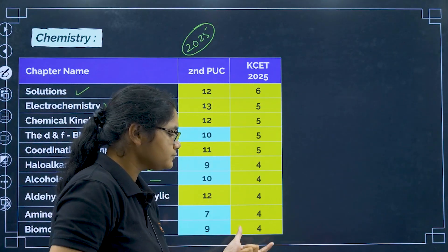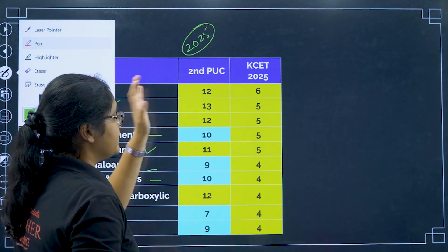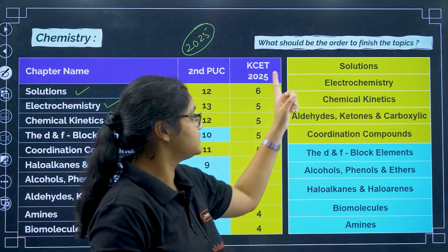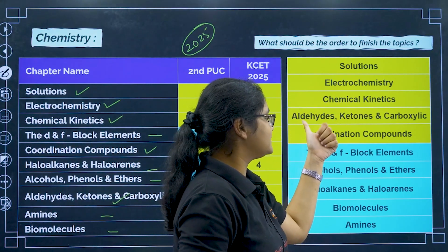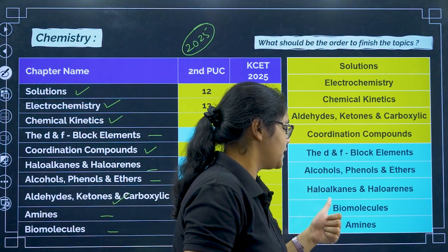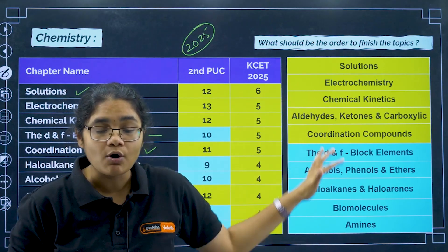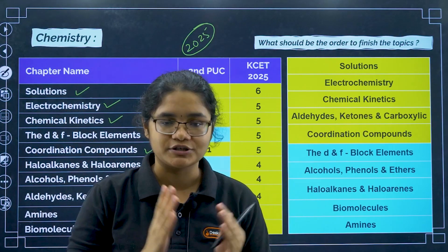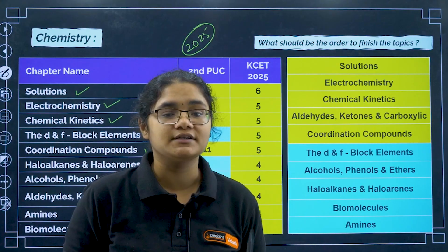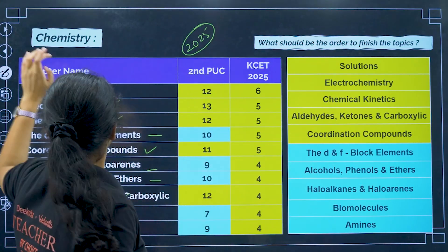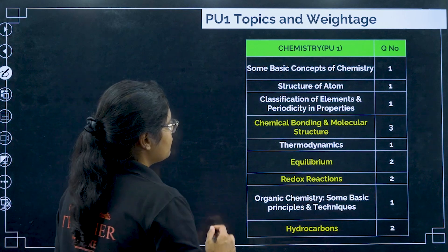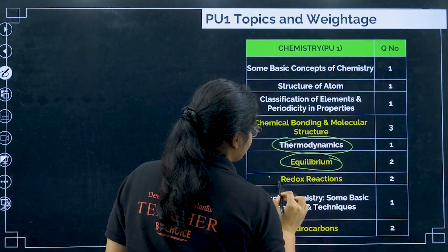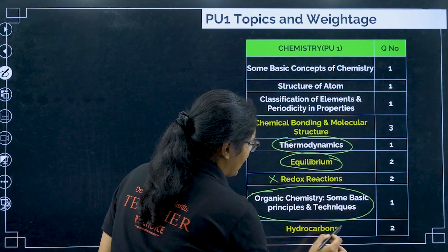What should be the order of finishing topics? First focus on: solutions, electrochemistry, chemical kinetics, aldehydes, coordination compounds, D and F block, alcohols, haloalkanes, biomolecules, and amines — in that order. In your school, complete chapters as they come, then revise in this priority order. After PU2, go to PU1 syllabus: chemical bonding, thermodynamics, equilibrium — and you can skip redox reaction — then organic chemistry and hydrocarbons.